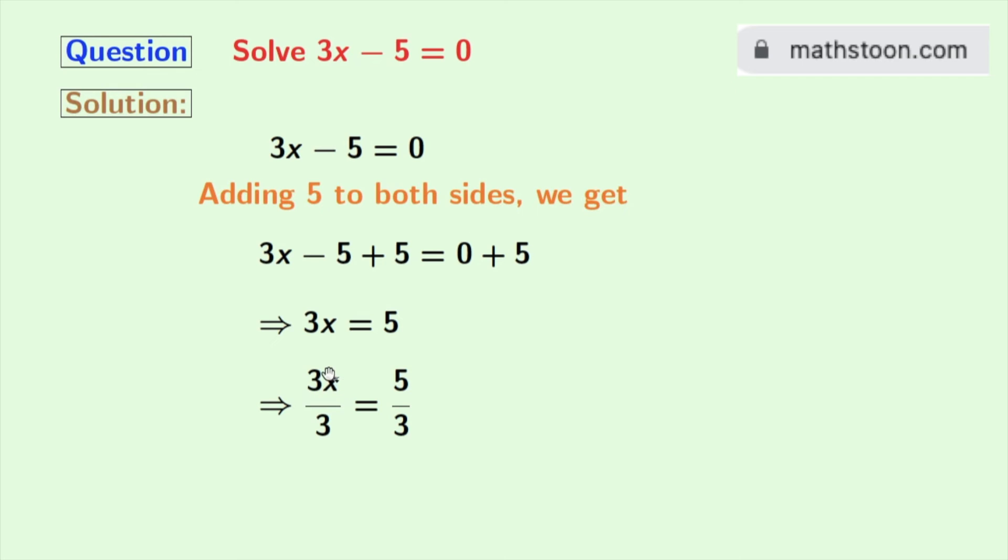Look that in the left hand side we have 3 in both the numerator and the denominator. So 3 gets cancelled. And we are left with x and as 5 by 3 cannot be simplified further, so we get x is equal to 5 by 3 as our final answer.